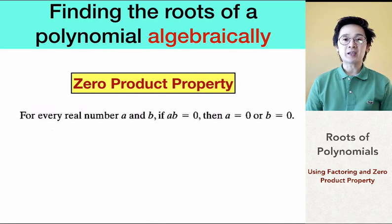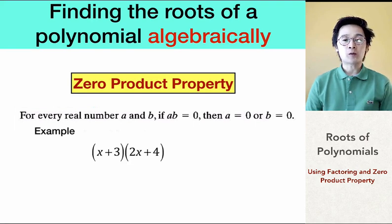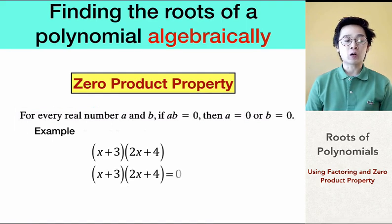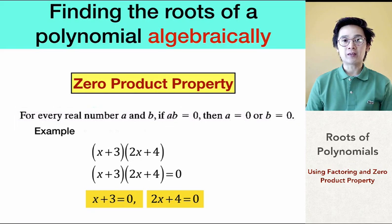The zero product property tells us that if we have two factors of a polynomial equal to zero, we separate the factors and equate each to zero. For example, if we have the factored form (x + 3)(2x + 4) = 0, we set x + 3 = 0 and 2x + 4 = 0 separately and solve for x.